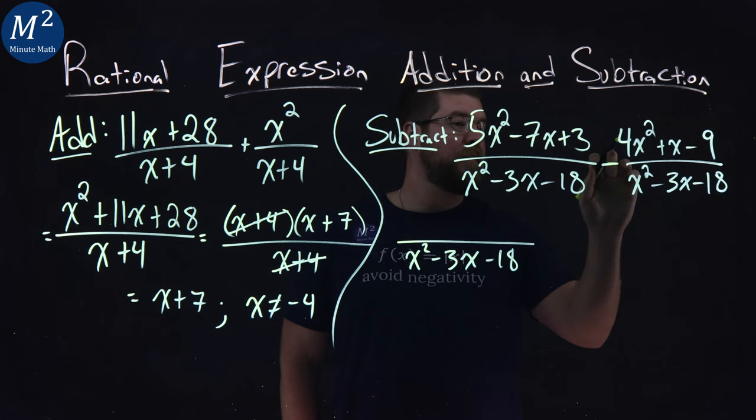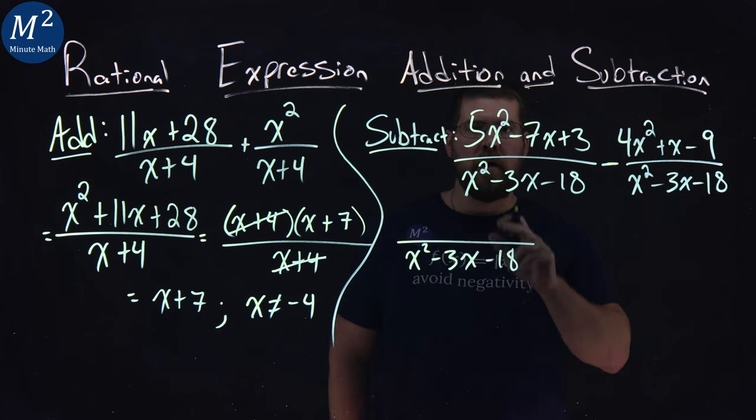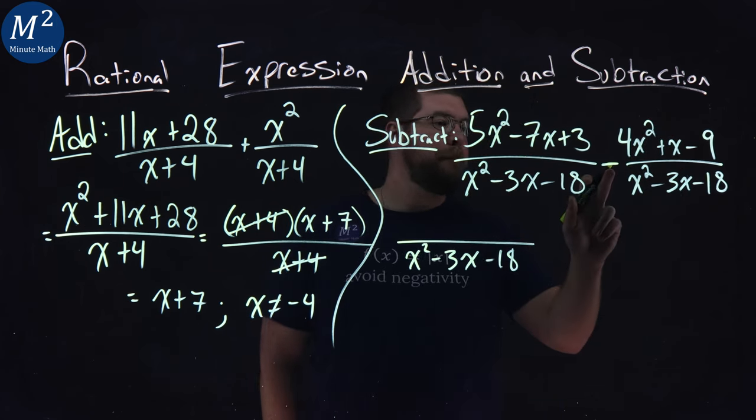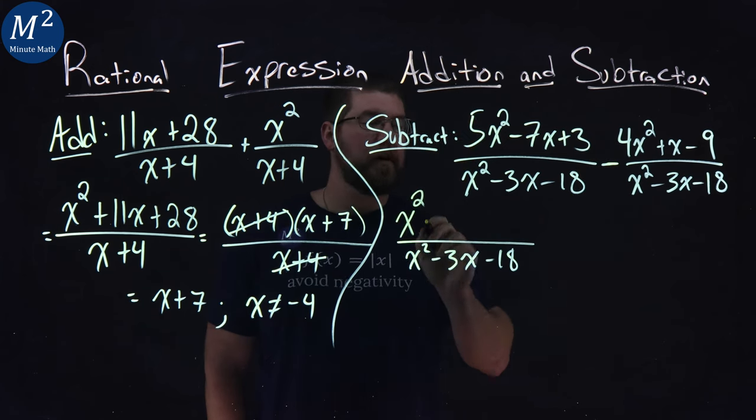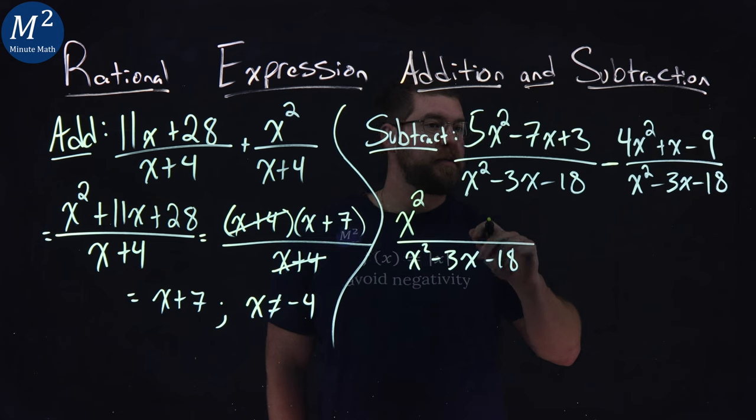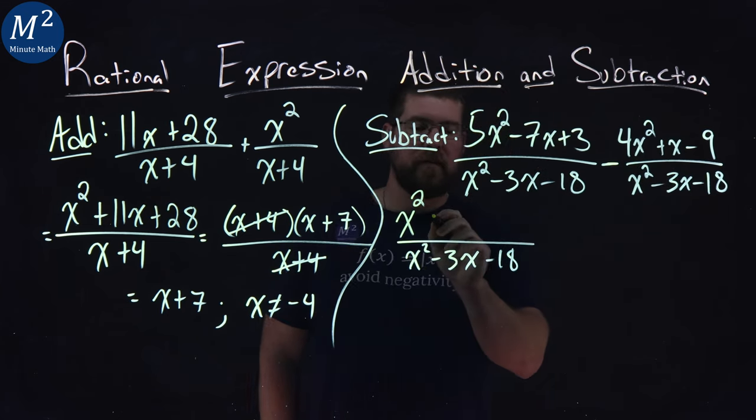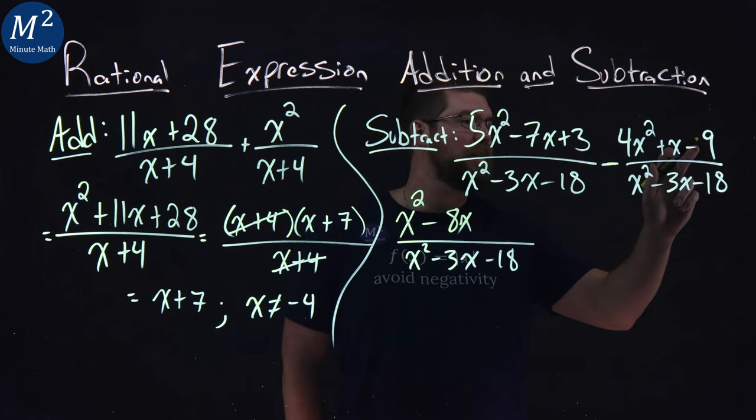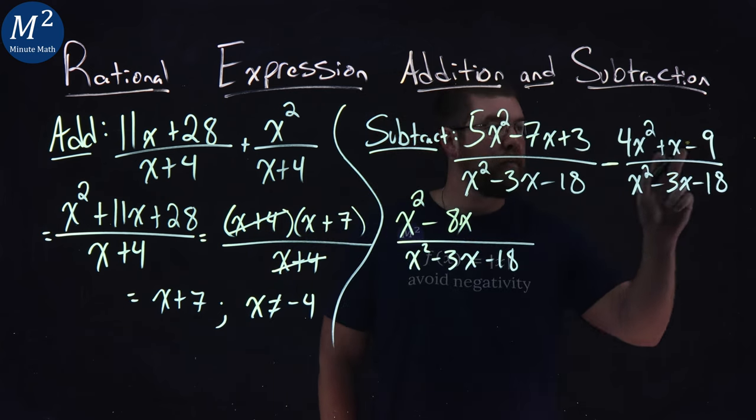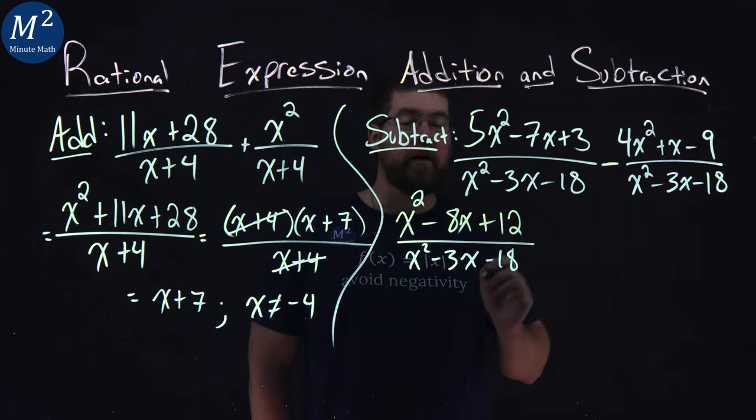We want to combine our like terms as we subtract here. Remember, the subtraction gets applied to each part in the numerator. So 5x squared minus 4x squared is just x squared. Combining again our like terms, negative 7x minus 1x is minus 8x. 3 minus a negative 9, or 3 plus a positive 9, is going to be 12.